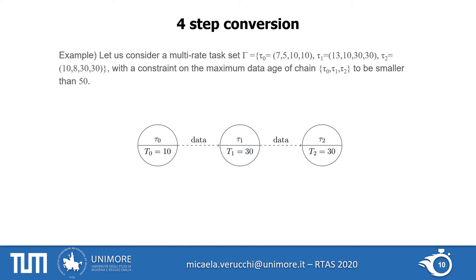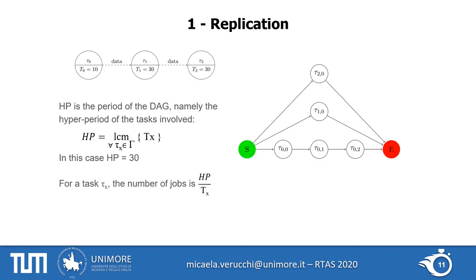Let us consider a simple example to understand the conversion from a periodic multi-rate task set to a single-rate DAG. We have three tasks with periods of 10, 30, and 30. A single data chain is defined from tau0 to tau2 through tau1, and its data age should not exceed 50 milliseconds. The conversion is divided into four steps. The first step is replication: the period of the resulting DAG is computed as the hyperperiod of the input tasks — in this case, 30. For each task tau_x, a number of jobs equal to the ratio between the hyperperiod and the period of tau_x is added to the DAG. Here, tau0 has three instances, while tau1 and tau2 have only one. We also add starting and ending points and insert obvious precedence constraints between consecutive jobs.